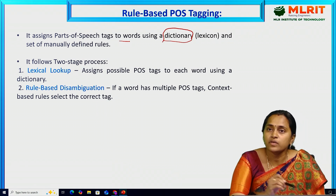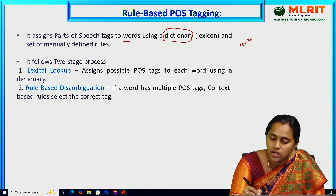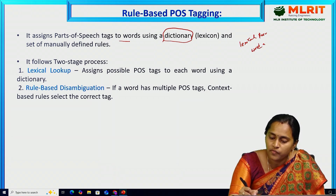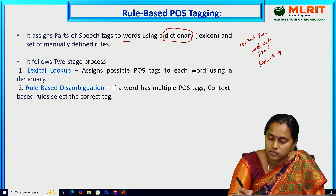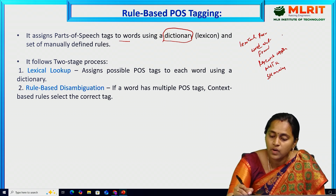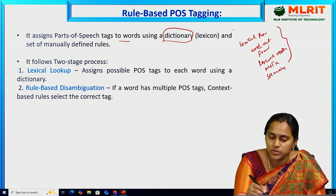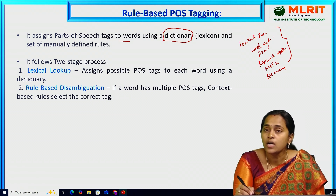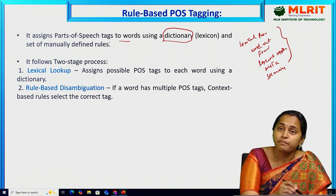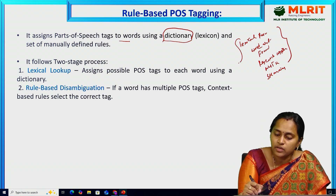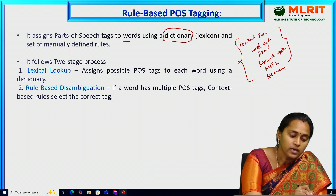We have different types of lexical resources. In the previous session we discussed lexical resources: WordNet, FrameNet, ResearchQuotra, NLTK, stemming. These are some different types of lexical resources. This means they contain different data, and by using this data we can apply the rules.